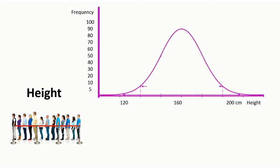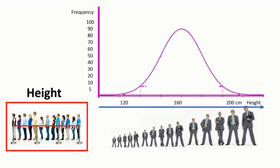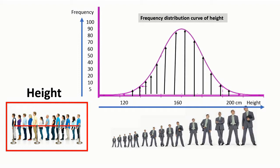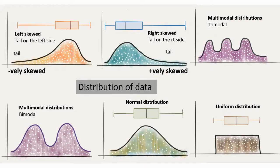Suppose we have a sample of people and we record their height. On the x-axis we have the values from smallest to largest, and on the y-axis we have the frequency we meet such a value. Now we have the frequency distribution curve of heights. Such data can be of any shape.